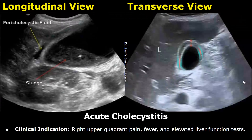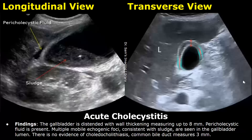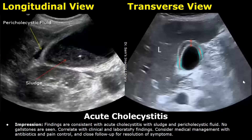Now we will look at acute cholecystitis. The clinical indication can be right upper quadrant pain, fever, and elevated liver function tests. In the findings, you can write about the distended gallbladder with wall thickening and the measurement of the wall. Then you can mention the presence of pericholecystic fluid, and if there is sludge or gallstones, you can write about that. In the impression, you can write findings are consistent with acute cholecystitis, mention the presence of sludge or gallstones, and note pericholecystic fluid. You must write: correlate with clinical and laboratory findings, and you can add a line about medical management.